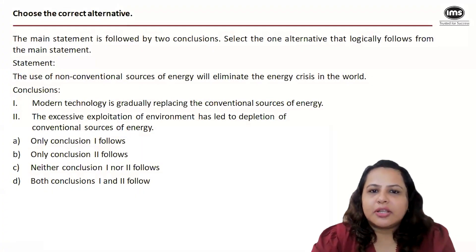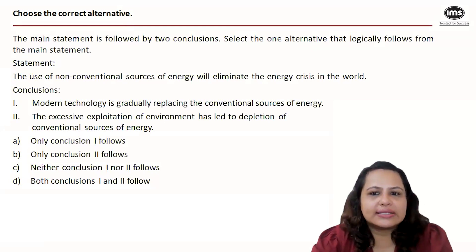The main statement is followed by two conclusions. Choose the alternative that logically follows from the main statement. Statement: The use of non-conventional sources of energy will eliminate the energy crisis in the world. Conclusion I: Modern technology is gradually replacing the conventional sources of energy.